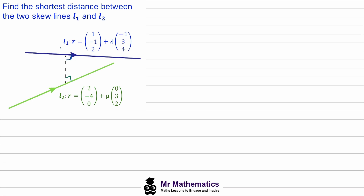We begin by calling this point P and this point Q, so what we're going to find is the magnitude of the vector P to Q. That will be the shortest distance between these two skew lines. The first thing we need to do is express P to Q using the general coordinates of line L1 and line L2, and we know that each of these are position vectors with respect to the origin.